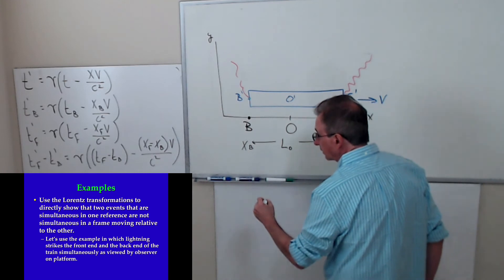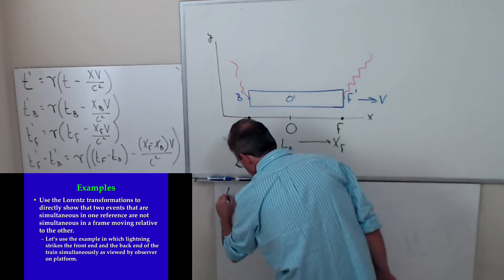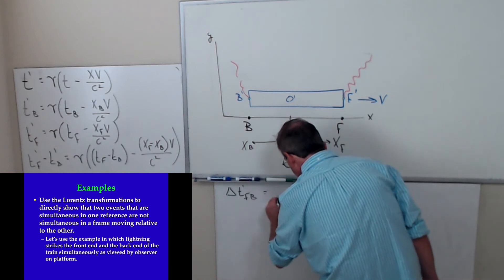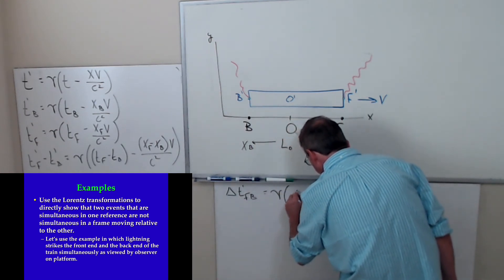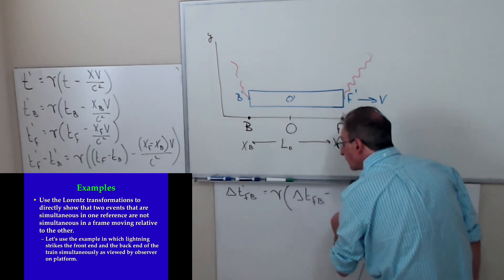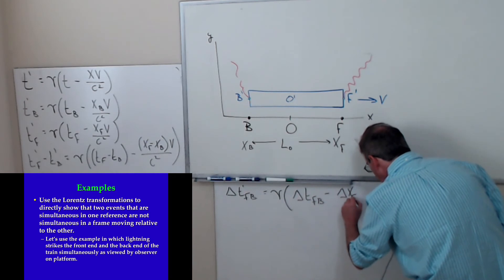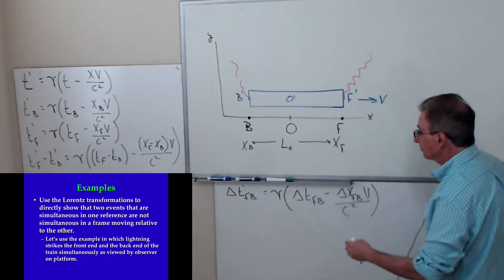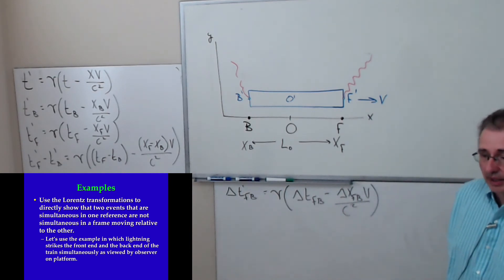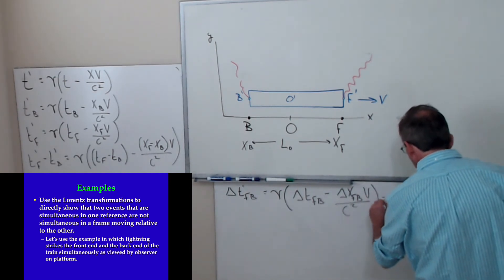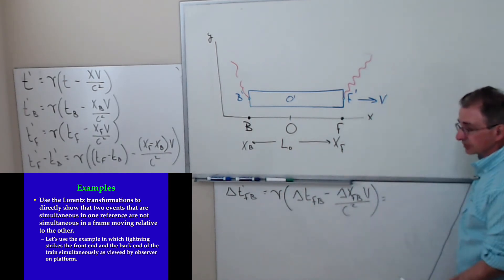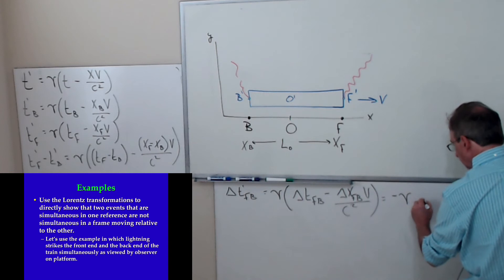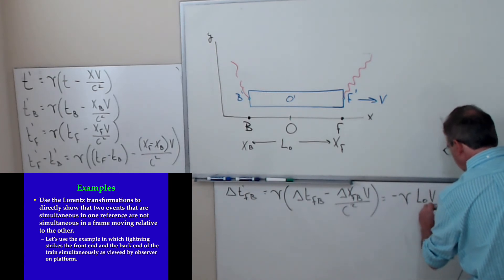Let me rewrite this and put in the value of zero. This term is zero because according to O, lightning strikes the front and back end of the train at the same time. This distance is just the proper distance between the two scorch marks. So what I get is gamma times L₀ times V over C squared.